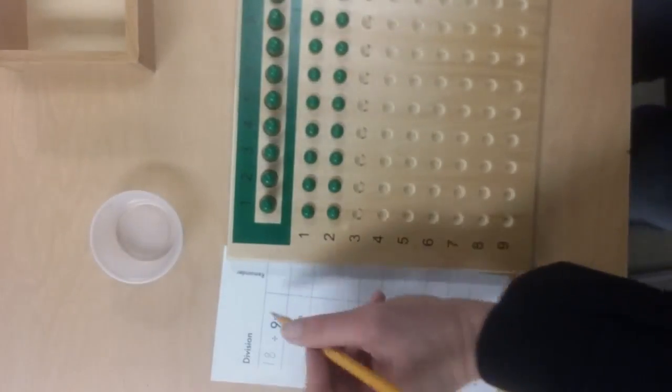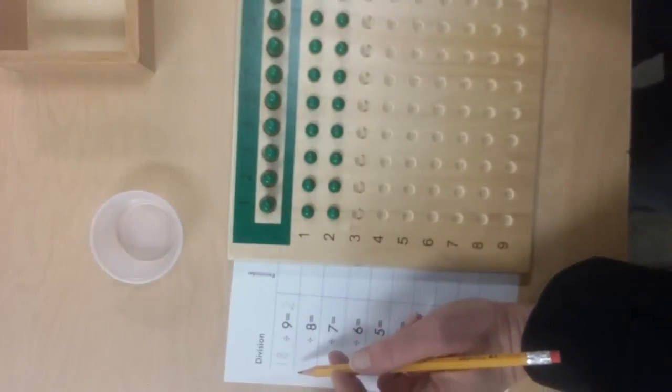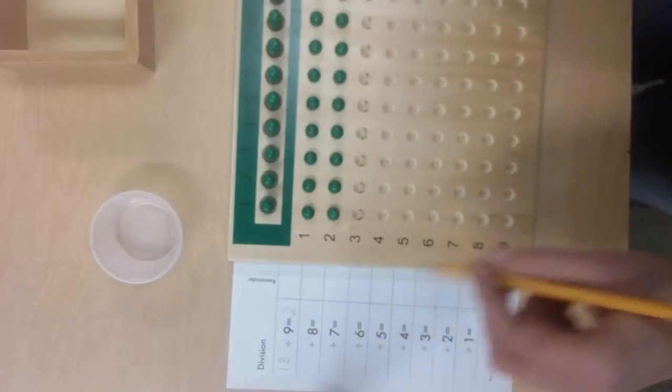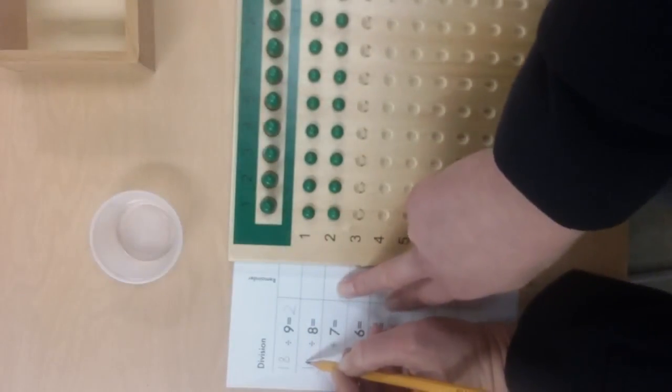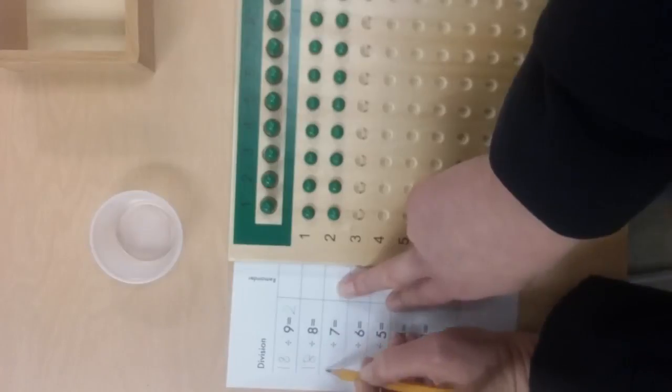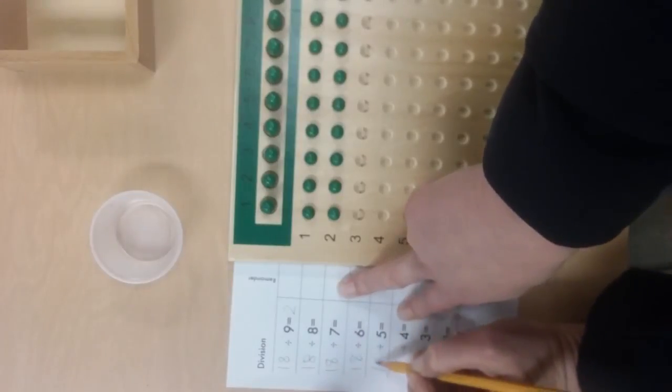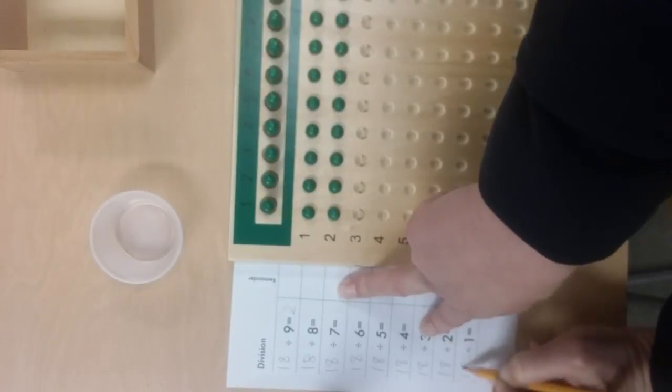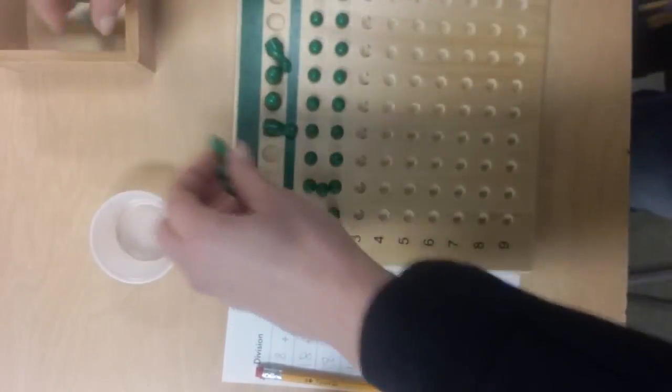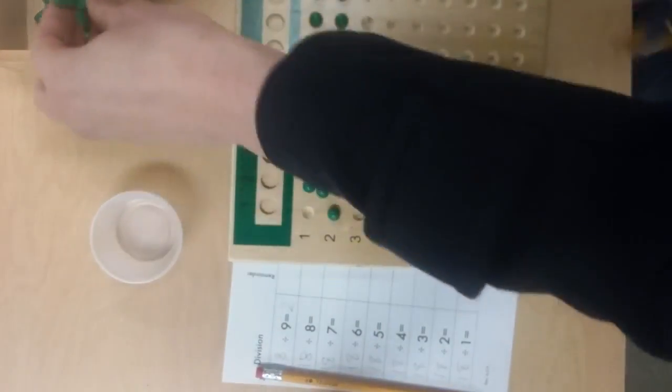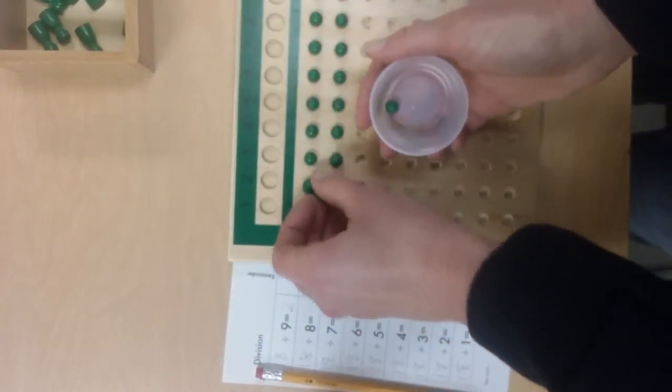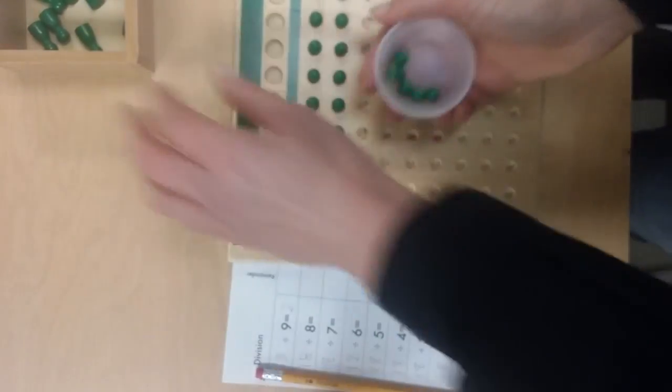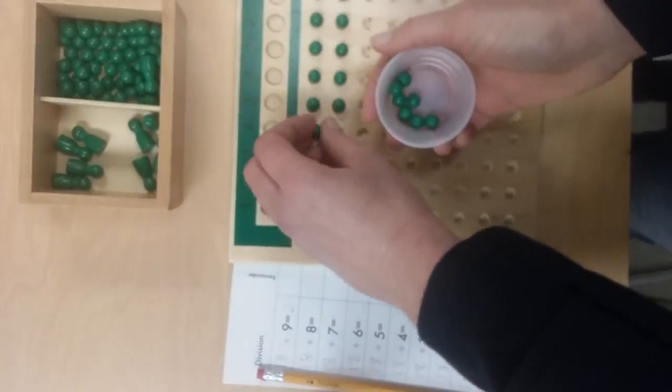Now the dividend is going to stay the same for all of these, so your students can go ahead and write 18 all the way down. Then they're going to take everything off the board. All the beads go back in the container—since they're already counted out 18, they don't want to put them back in the box because then they'll have to count them out each time.